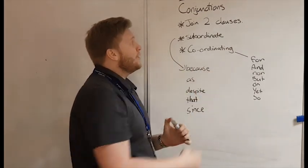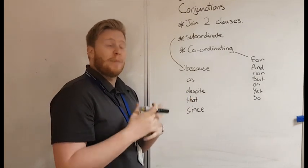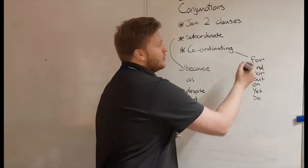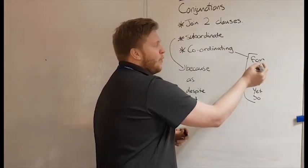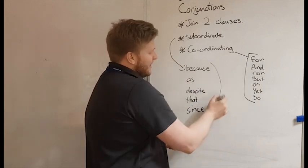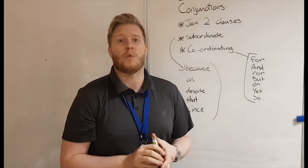And then we also have coordinate conjunctions. What they do is join two main clauses, make compound sentence. And that is just this list here. They're what we call fanboys to remember. For, and, nor, but, or, yet, so. This list, there's a lot more, but that are the only coordinate conjunctions that we have.